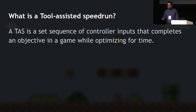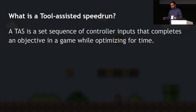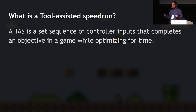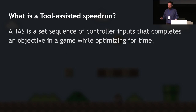So what is a tool-assisted speedrun? A TAS is a set sequence of controller inputs that completes an objective in a game while optimizing for time. The definition is close to a regular speedrun, but the main difference is that while a speedrun is a performance, a tool-assisted speedrun is a creation — a project you work on for hours, days, months, or even years. The result is a sequence of controller button presses that, when played back while the game is running, completes the objective.